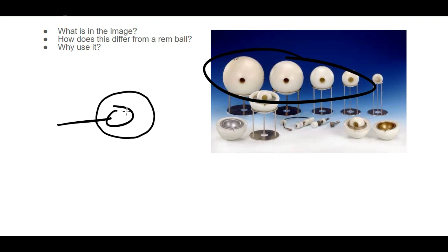Different spheres have different energies; they moderate the neutrons at a different rate, and that's where this term rim ball comes in. A rim ball is just a Bonner sphere that is 10 to 12 inches. With a 10 to 12 inch sphere, we can directly measure the dose equivalent.